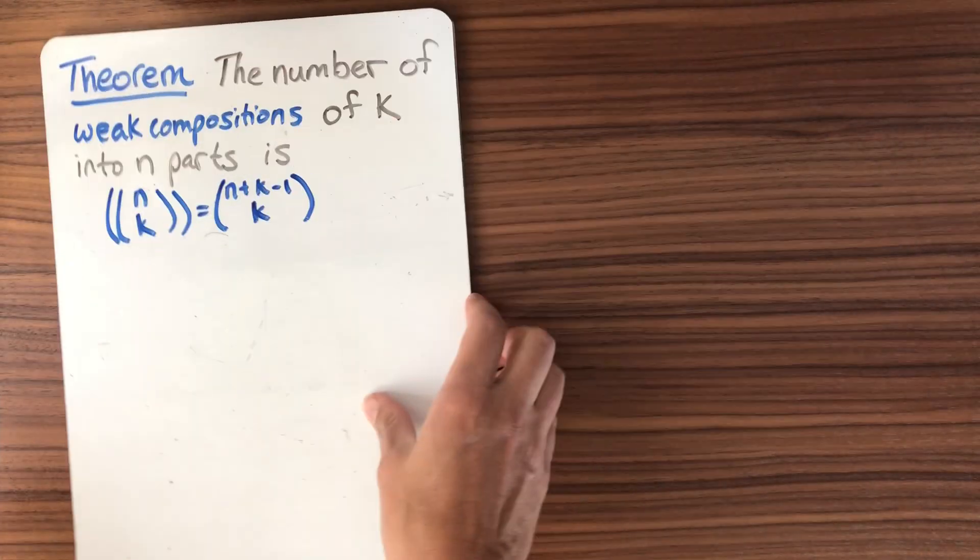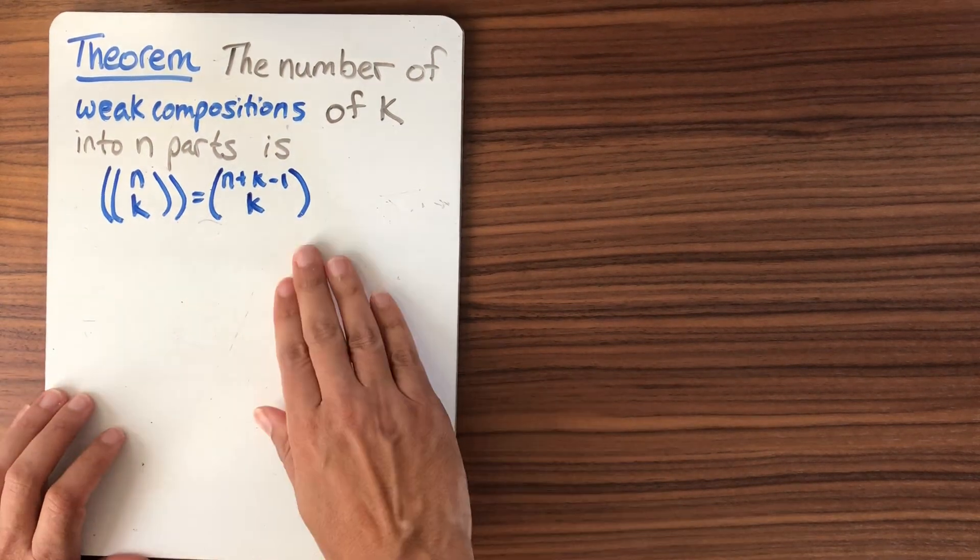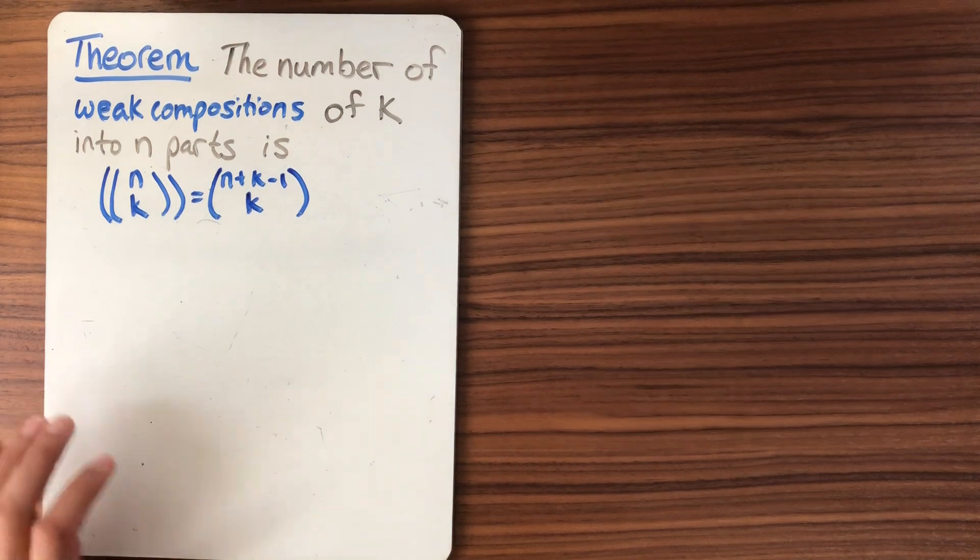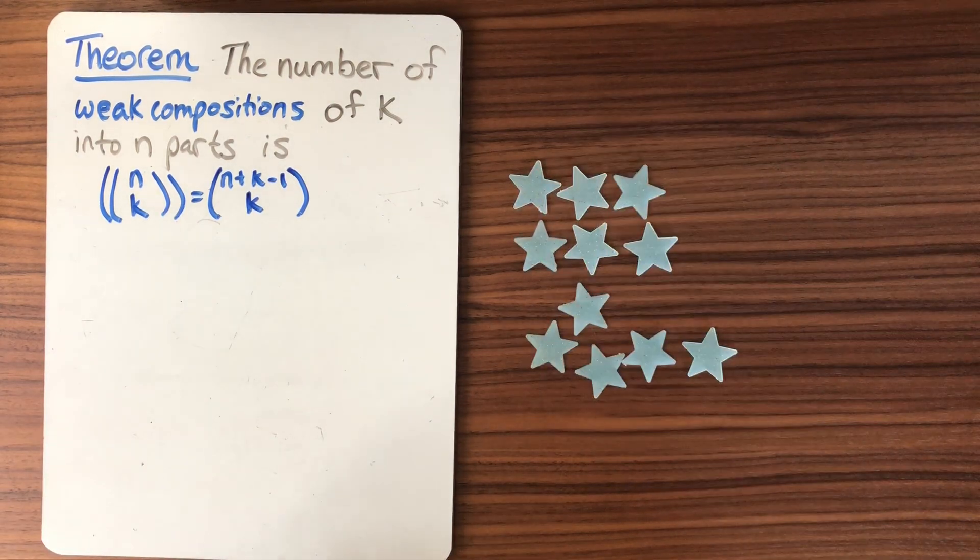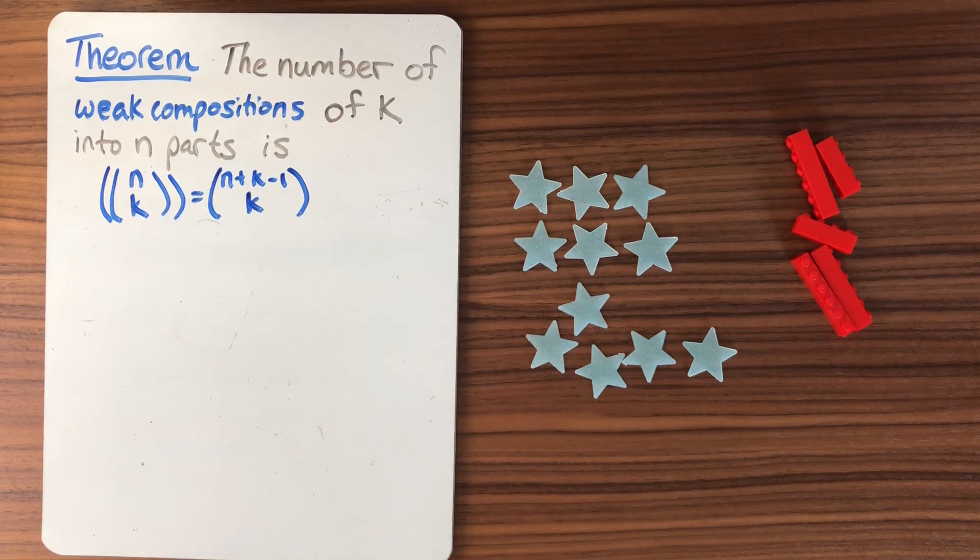Let's prove it though. That's the best way to understand why a theorem is true. So again, because this comes from the stars and bars argument, let's think of it as stars and bars. Let's think of the example that we had before.